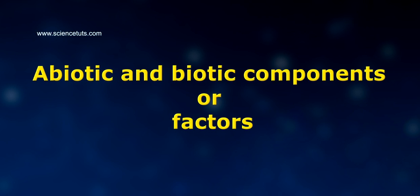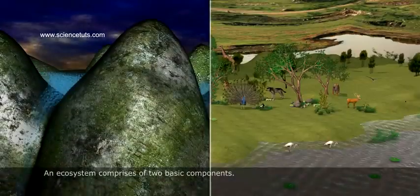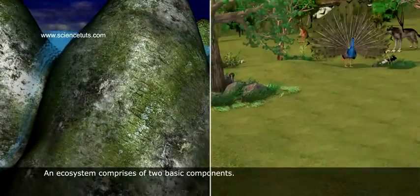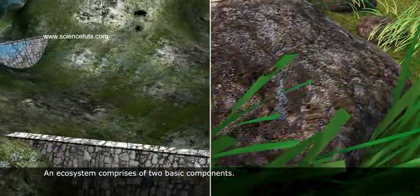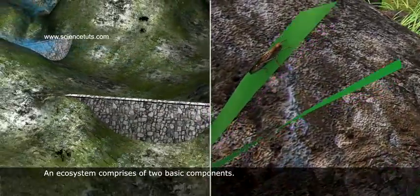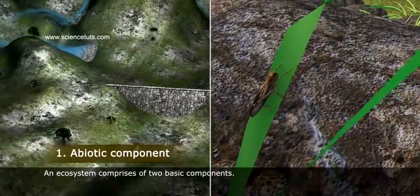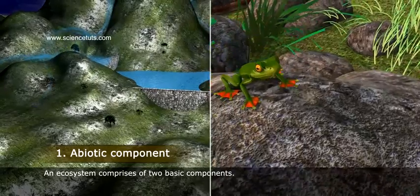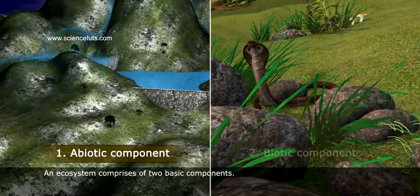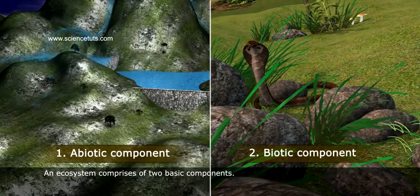Abiotic and biotic components or factors. An ecosystem comprises of two basic components: 1. Abiotic component, 2. Biotic component.